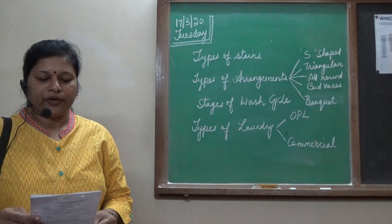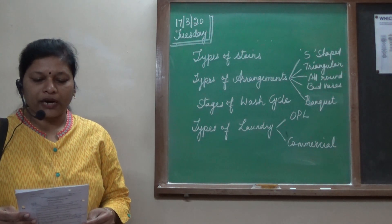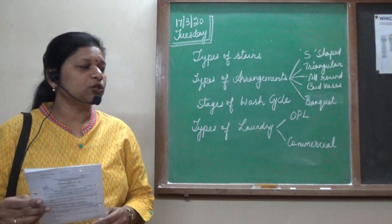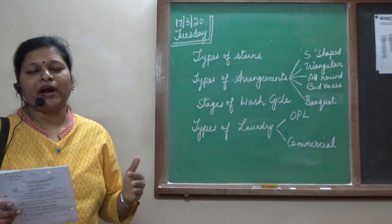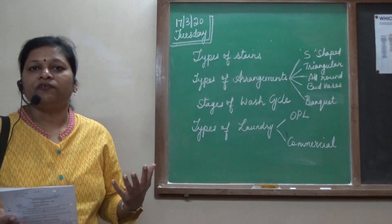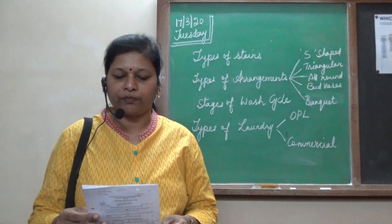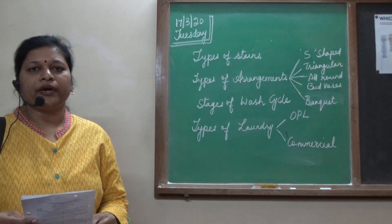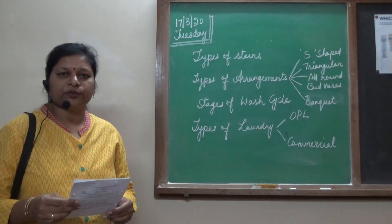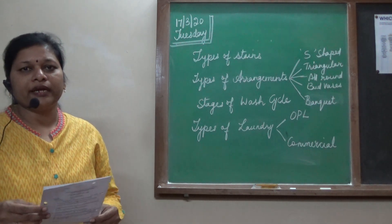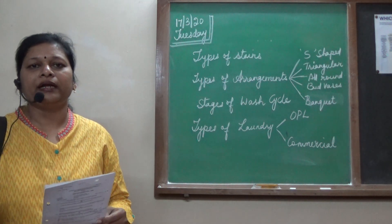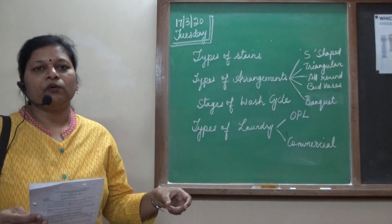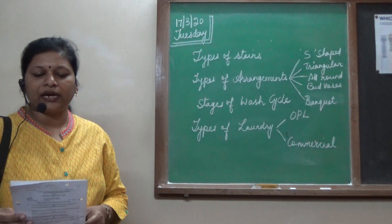Coming to question 6: explain the following terms — there is no choice in this. Linen chute: a tunnel which carries soiled linen from the various floor pantries to the laundry directly. Par stock: the minimum amount of linen required for smooth operations of the department. Tumble dryer: a dryer which helps in drying of clothes. Focal point: a principle of flower arrangement where the center flower of the arrangement is called the focal point, as the entire arrangement is done based on it. Monogramming: the hotel symbol which is embossed on the towels and linen. That gives you 5 times 2, or 10 marks.